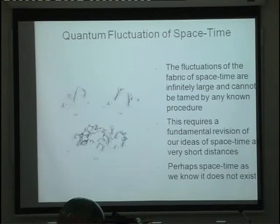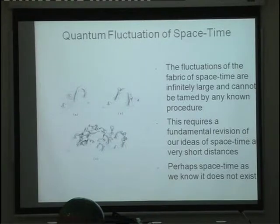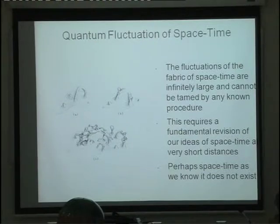Unfortunately it is general relativity that has to give way — quantum mechanics survives. Why? Just imagine the fabric of space-time I talked about, that smooth rubbery stuff. Now imagine that smooth stuff becomes very cranky — it's fluctuating all the time. Those fluctuations are because of the fuzziness of quantum mechanics.